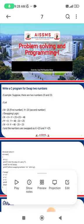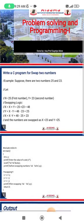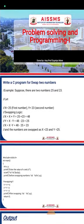The swapping logic is: first, x = x + y, so 25 + 23 = 48. Then y = x - y, so 48 - 23 = 25. Again using the swapping logic, x = x - y, that is 48 - 25 = 23. So the x and y values are now swapped.